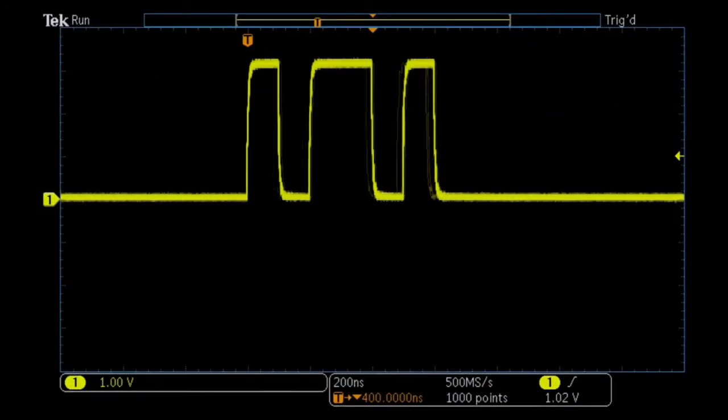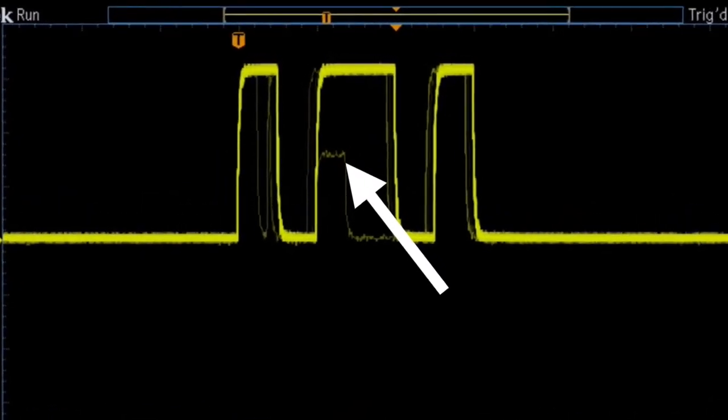While probing signals on the circuit board, we see faint traces in the waveform, indicating infrequent events that do not look like the digital signals we expect.